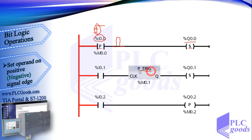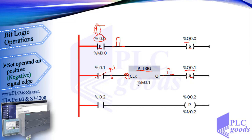This instruction queries a zero-to-one change in the signal state of the RLO at its input. When I0.1 changes to closed, the RLO changes from 0 to 1 at this input, and this block generates a pulse which sets Q0.1 to 1. In the last line, when I0.2 changes to closed, this instruction sets its output to 1 for just one program cycle.